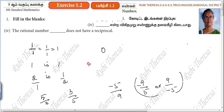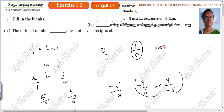Now, 0's reciprocal — 0 by 1, its reciprocal would be 1 by 0. But 1 by 0 is not defined. Not defined.